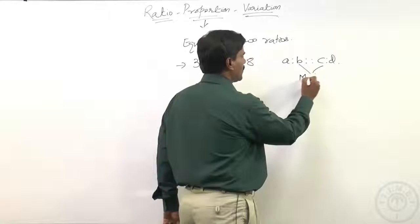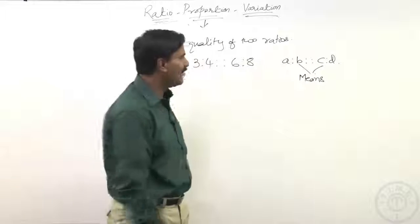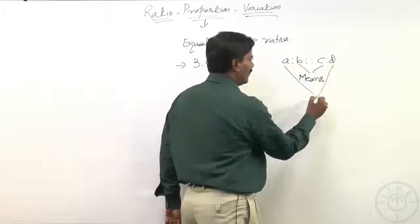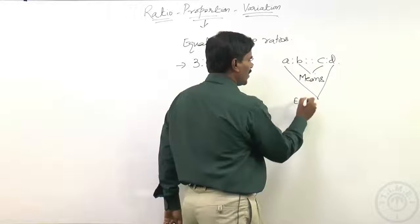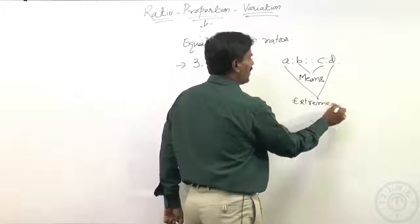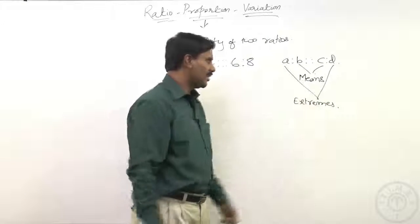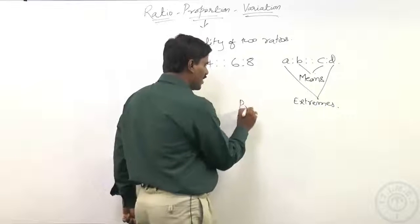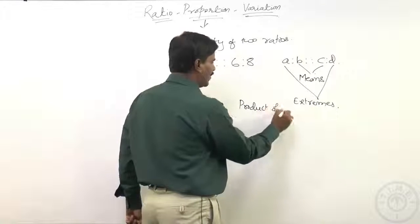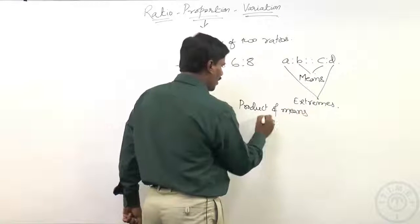The inner terms have a specific name — we call them as means. And we have a and d as extremes, the two outer terms we call them as extremes. When we have two ratios in proportion, product of means will be equal to product of extremes — this is what we have already studied earlier.